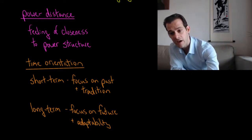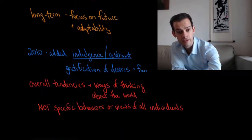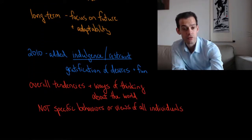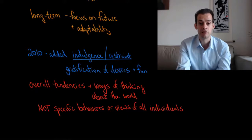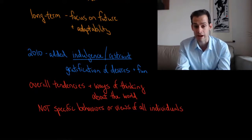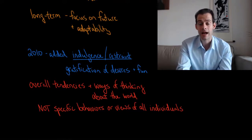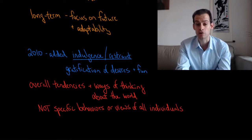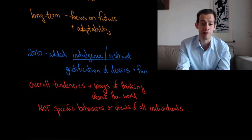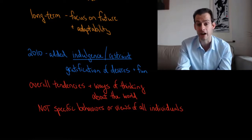In 2010, Hofstede proposed a sixth cultural dimension, which is referred to as indulgence and restraint, and this is related to how much the culture emphasizes the gratification of desires and fun.